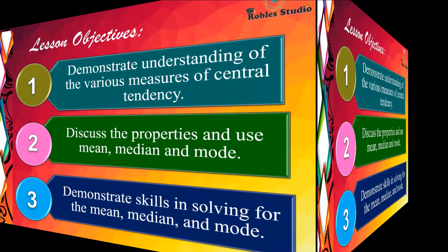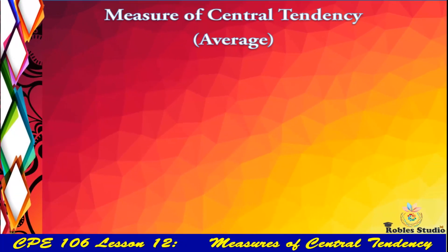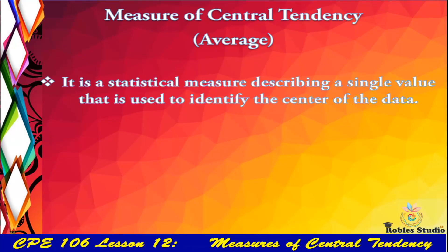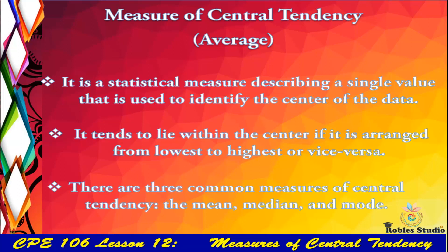The measures of central tendency are simple averages. There are things you have to understand first: it is a statistical measure describing a single value that is used to identify the center of data. It tends to lie within the center when arranged from lowest to highest or vice versa. There are three common measures: the mean, median, and mode.